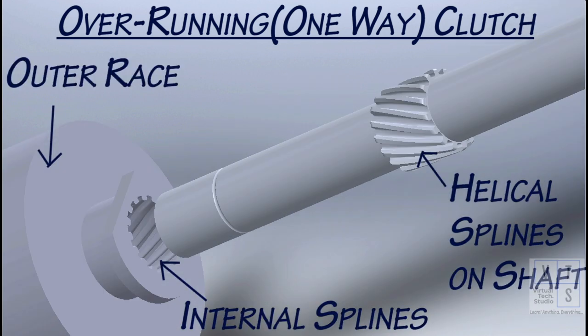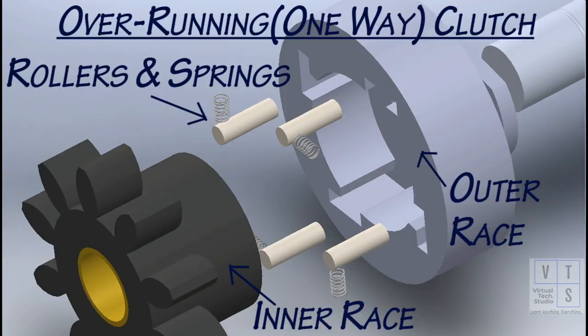The power is transmitted through the splines on shaft, which mesh with the internal splines of outer race of overrunning clutch. When the outer race is rotated, the rollers get trapped between outer and inner race and transfer power to pinion. When engine gets started and drives pinion at high speed, the rollers get released and power transfer is stopped.